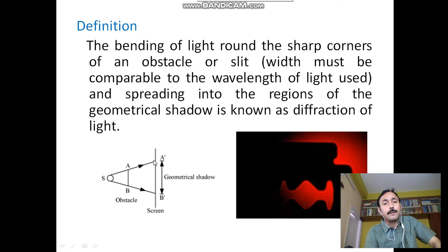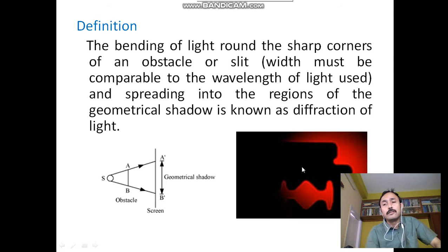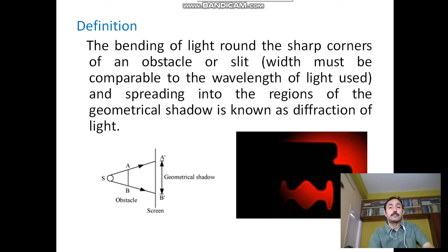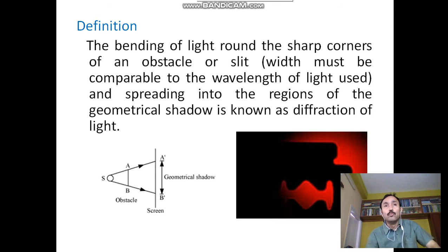Suppose this is the source, light is coming from one direction. This is the obstacle AB. Then its geometrical shadow is this region. The light source will illuminate the part above A-dash and the portion below B-dash. This can be explained using a razor blade — where the metal part is, it will look black; that is the geometrical shadow. If light is coming from doors or windows, we have to stick to the condition that the width of the aperture must be comparable to the wavelength of light used.